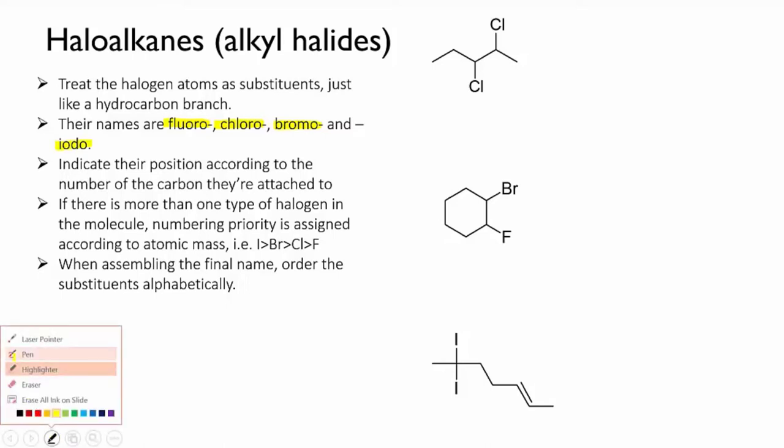Let's try naming this first one. The longest carbon chain here is obvious, it's pentane. So next we'll look at the substituents. There are no alkyl groups, only the two chlorine atoms. So we number the chain in order to give the chlorines the lowest possible number. And that will mean numbering from the right.